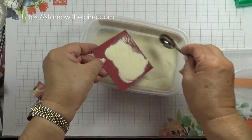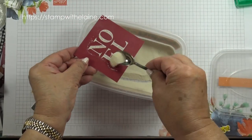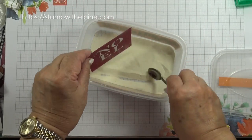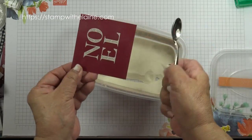Bring in the white embossing powder and sprinkle that over the top. Tap off the excess.